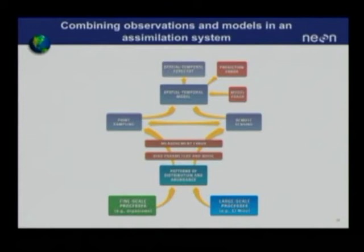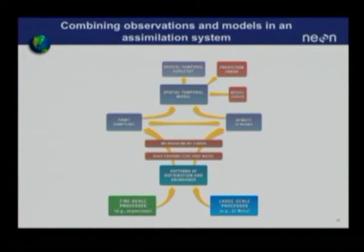Above that comes the observing system. Within the NEON system, we have two observing strategies: point sampling — local or regional sampling with people in the field and instruments on towers — and remote sensing using airborne or space-borne assets. Ideally, we would combine these two types of information in a spatial temporal model to produce a forecast, either of the future or of the unobserved regions in between the point samples on the ground.